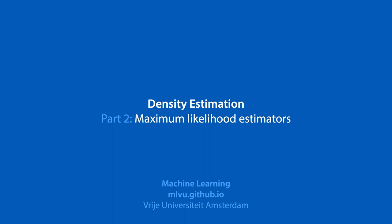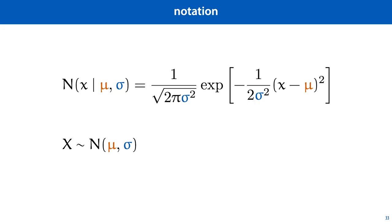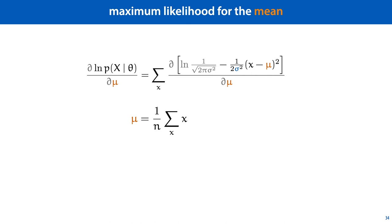Now that we have a better understanding of why the normal distribution looks the way it does, let's have another look at fitting one to our data. Now we've seen the maximum likelihood estimator for the mean of our distribution already. It's the arithmetic mean.